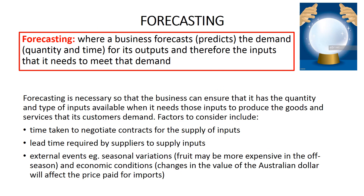The first materials management strategy is forecasting. Forecasting is where a business predicts the demand for its outputs — both the quantity of outputs likely to be demanded by customers and when customers are likely to require those outputs. Forecasting also involves predicting the inputs the business needs to meet that demand. Look down the left-hand side of your vocabulary sheet, find the term forecasting, and write this definition in there. Forecasting is necessary so that the business can ensure it has the right quantity and type of inputs available when it needs them to produce the goods and services its customers demand.